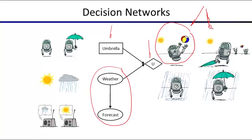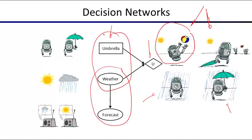Here we're depicting different types of outcomes. The first outcome: it's sunny and you decided not to bring your umbrella, so you get to play with the beach ball. Another outcome: it's still sunny but you brought your umbrella — your buddies are playing with the beach ball and you're dragging around your umbrella, not as happy, lower utility value. Another outcome: it's raining and you did not bring an umbrella — that's the worst of all worlds. Then it's raining and you brought an umbrella, so it's something medium. When drawing these outcomes for the utility node, I'm really looking at the parents of the utility node and all combinations of values they can take on.